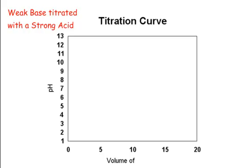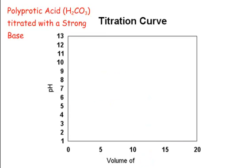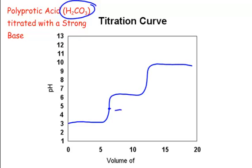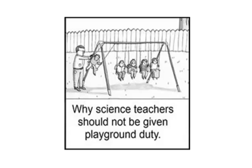The third curve is a weak base titrated with a strong acid — it starts higher and shoots downward, with the equivalence point below pH 7, because you end up with an acidic conjugate. The fourth curve is for a polyprotic acid, which has more than one proton. It produces two separate rises with two equivalence points — the first where you give away the first H+, the second where you give away the second H+, as in H2CO3. I hope this helped, and I will see you in class for acids and bases after the break!